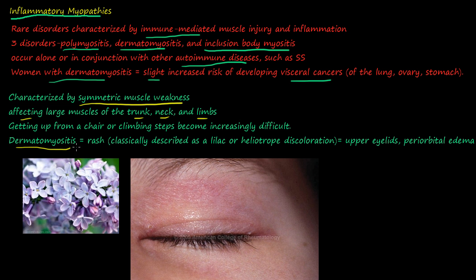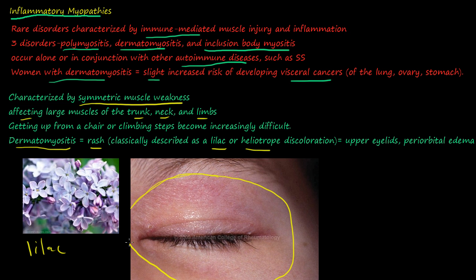With dermatomyositis, you can get a rash characterized by lilac or heliotrope discoloration. Here is a picture of a lilac bush to give you the color. In this patient, you can see right around the eye some discoloration that looks like lilac or heliotrope. That's the rash you get with dermatomyositis — it happens in the upper eyelids, and you can also get periorbital edema.